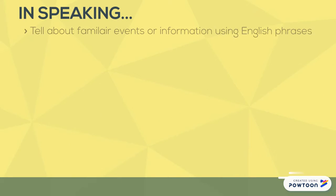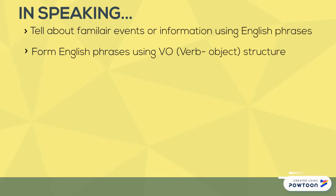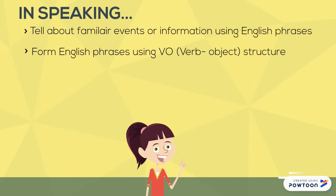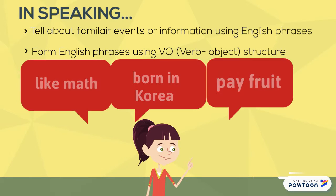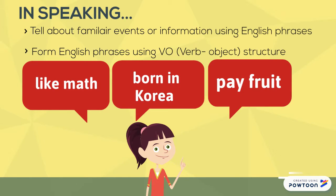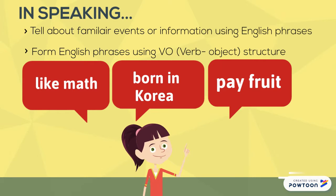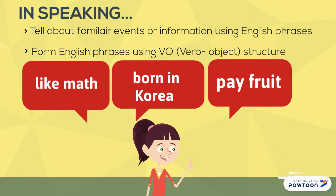In speaking, Seungji was able to tell about familiar events or information using English phrases. She was also able to form English phrases using a VO structure and produce sentences such as "like math," "born in Korea," and "pay fruit."